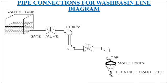This is the horizontal pipe. The tap is used for opening and closing purposes, then the washbasin. The washbasin outlet has a flexible drain pipe.